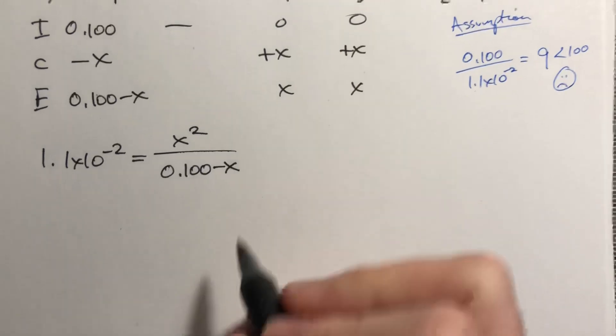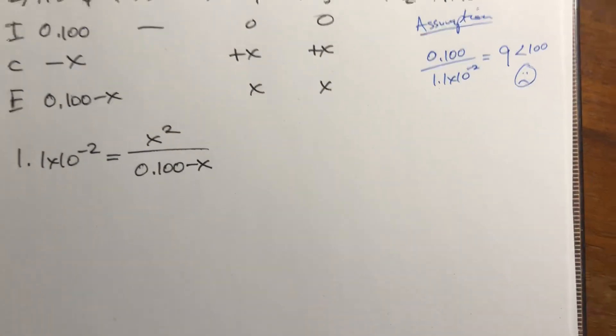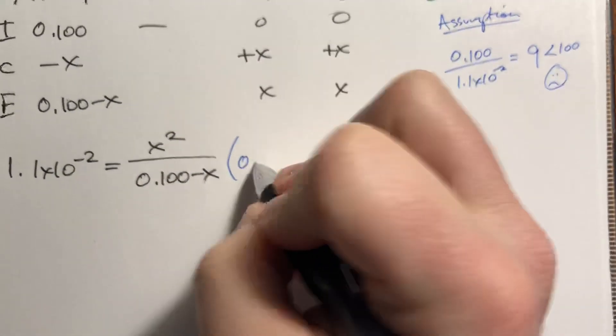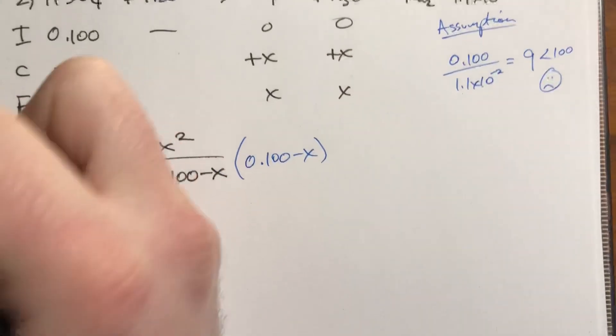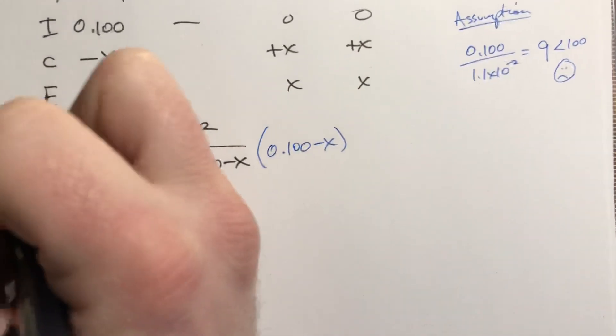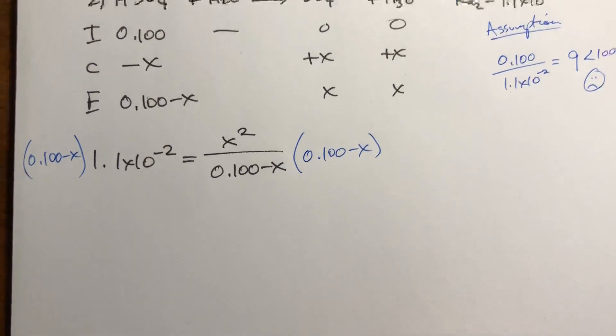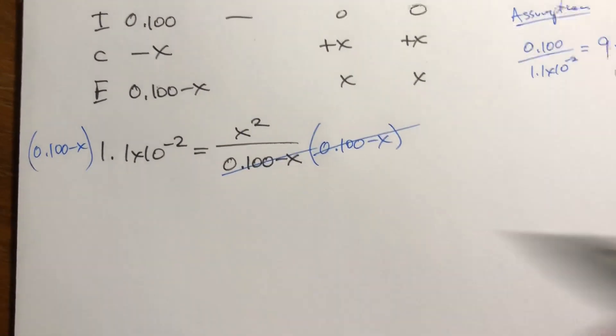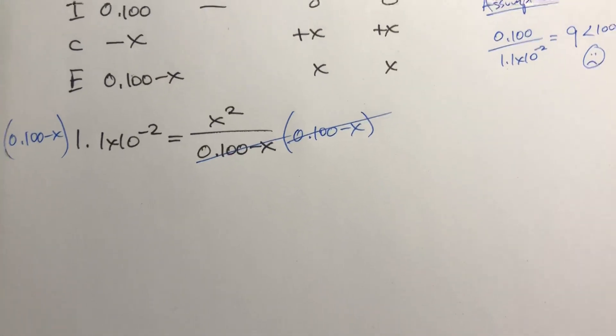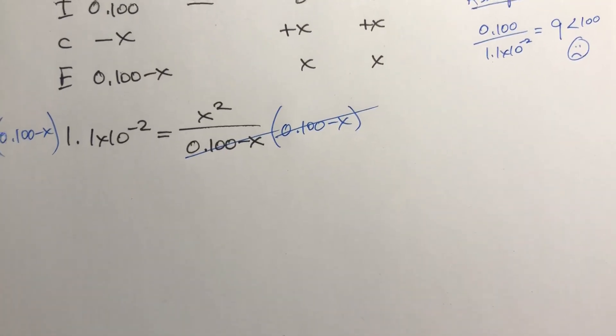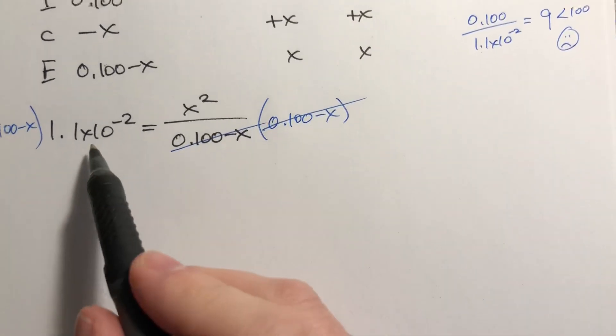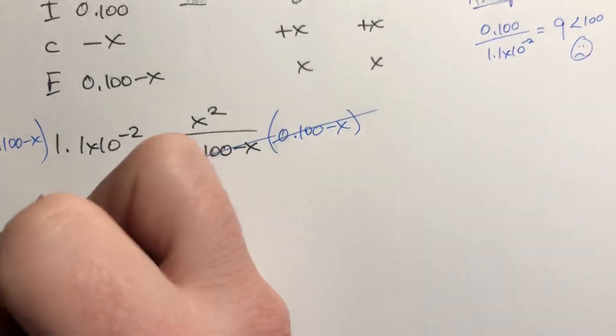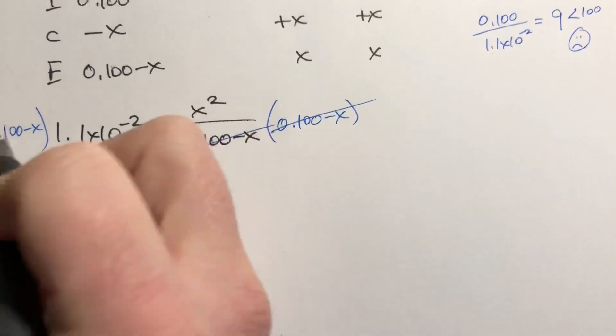So the first thing we're going to do is multiply this to the other side, and we'll do that on both sides. On this side, it cancels out, and you end up with this, which we're going to need to multiply out. So if you multiply that out, 0.1 times 1.1 times 10 to the negative second is 1.1 times 10 to the negative third. It's a tenth of that.